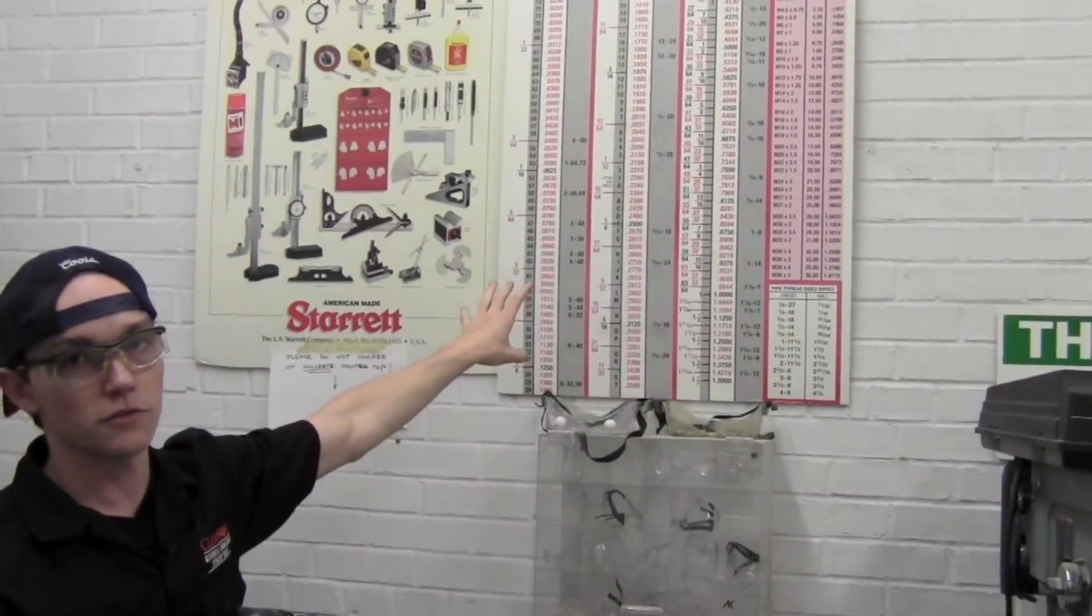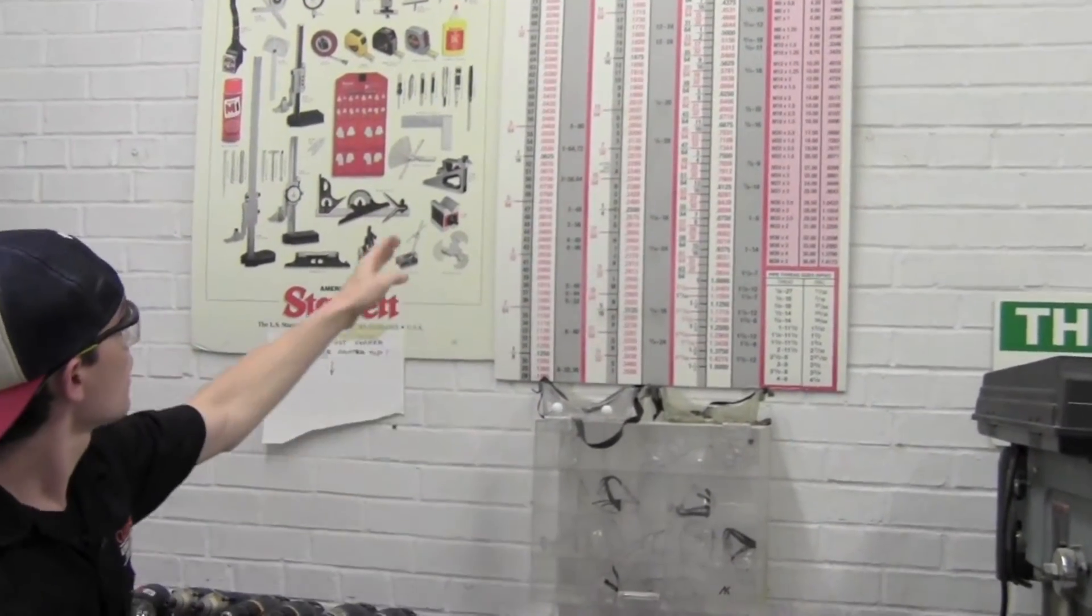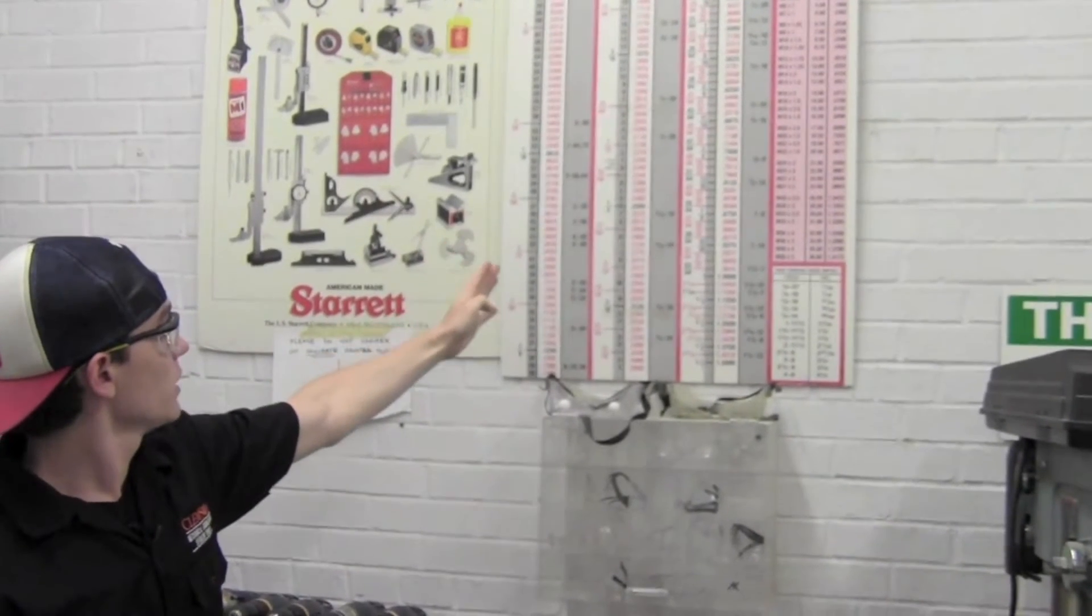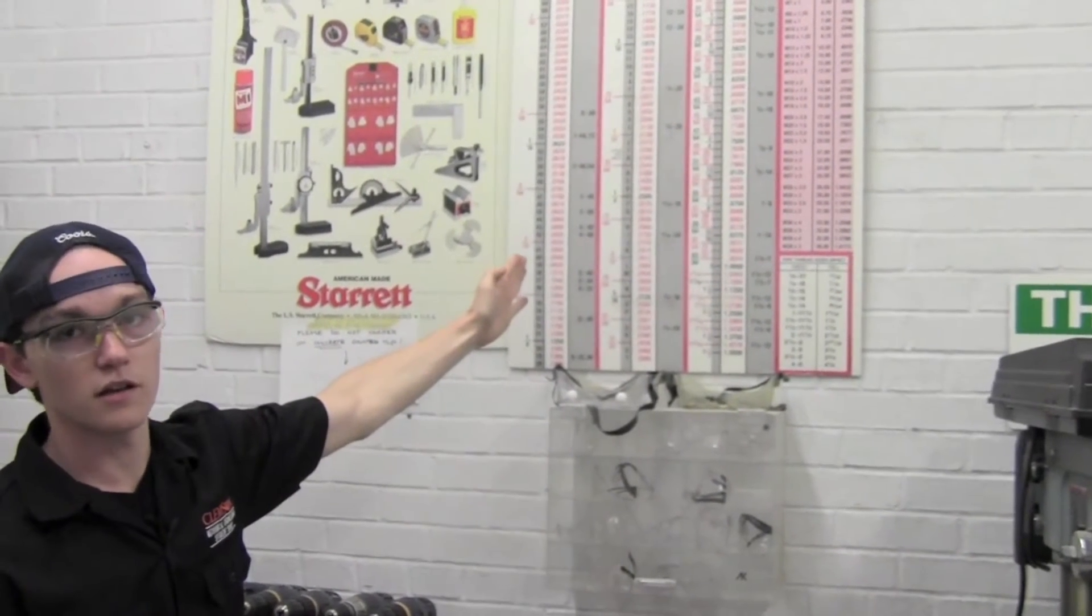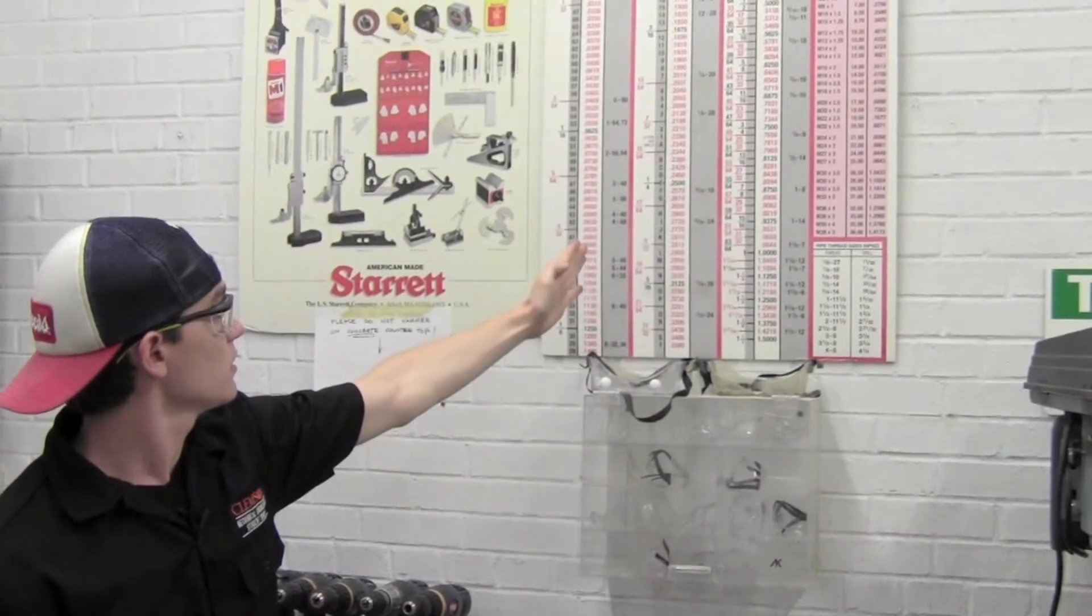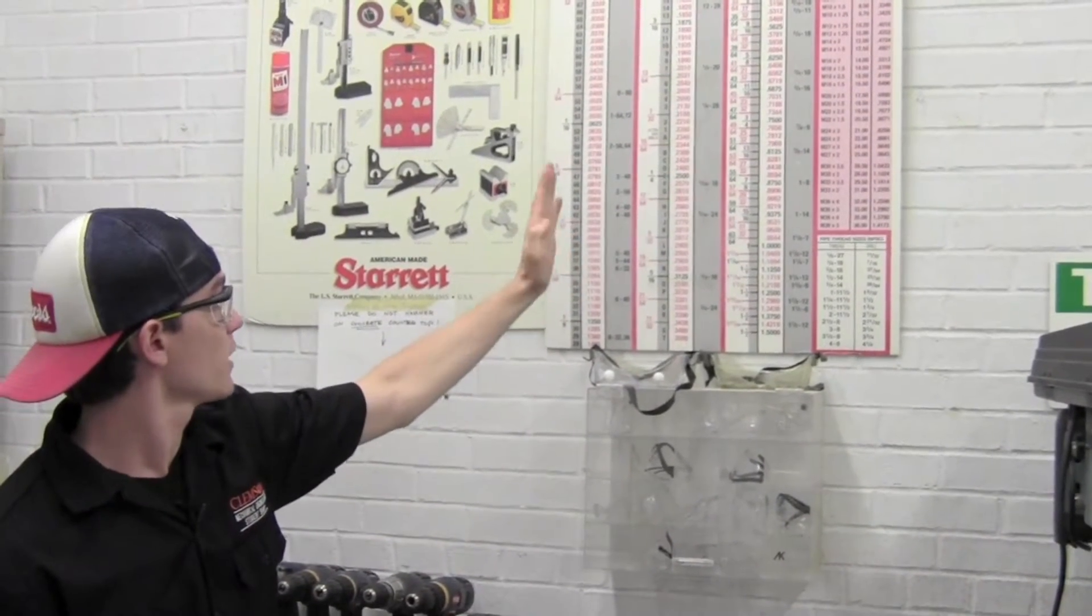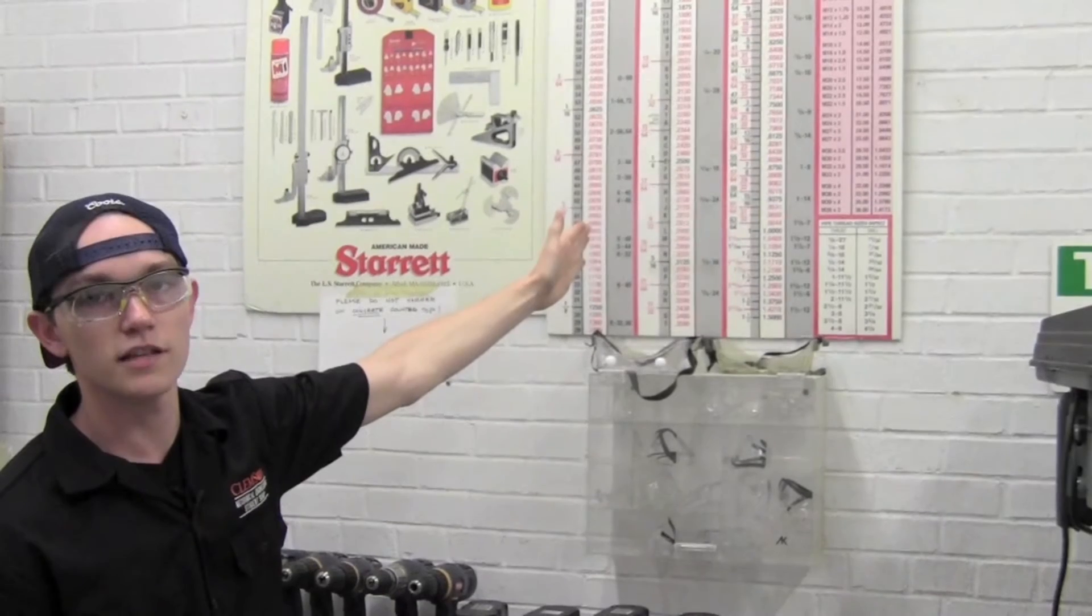The leftmost column is the fraction equivalent of the diameter, the middle column is the decimal equivalent of the diameter, and the right column is the tap size that would correspond to that diameter.